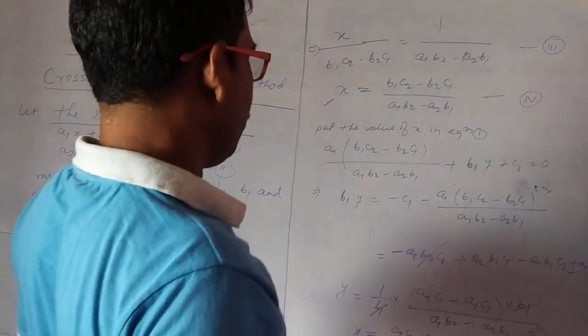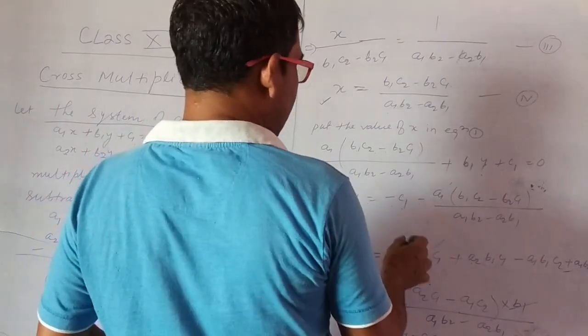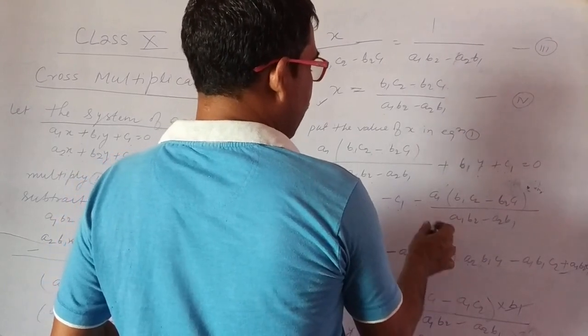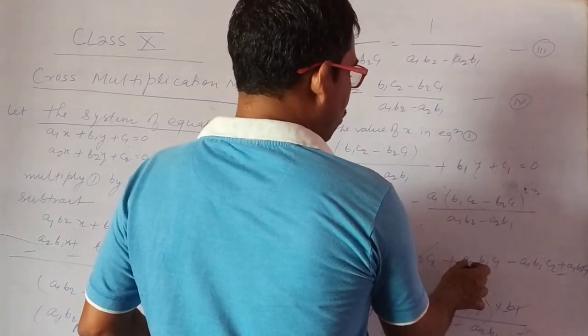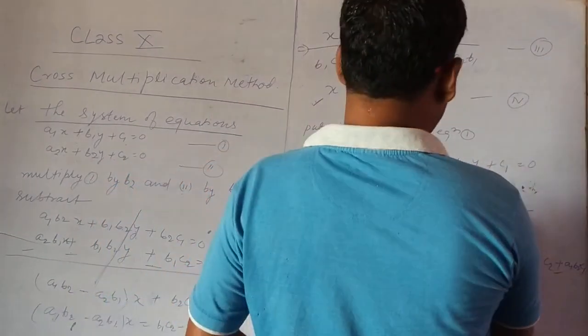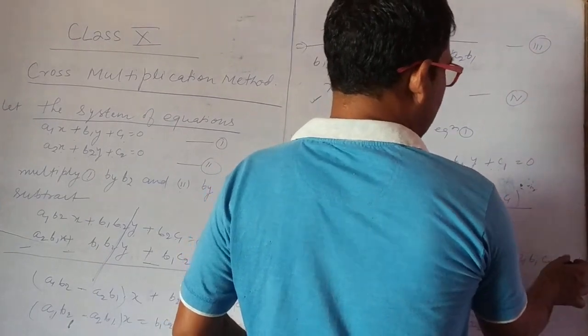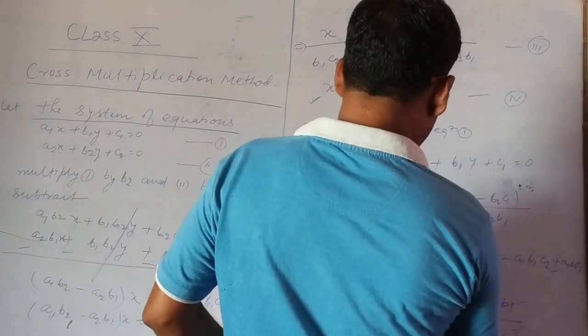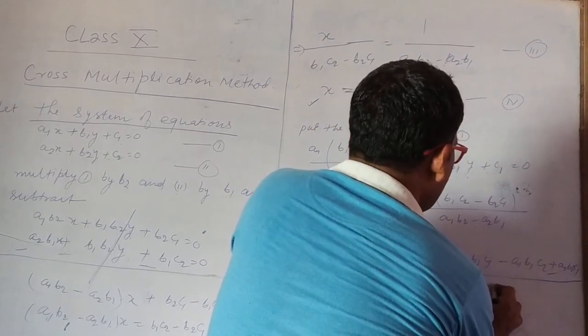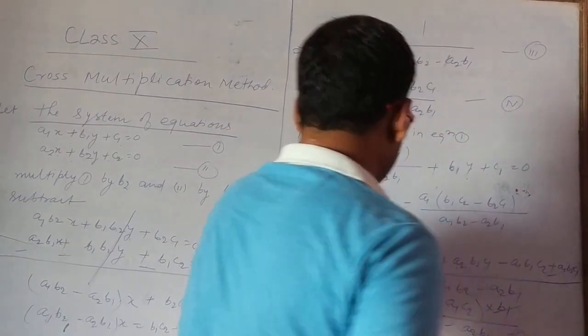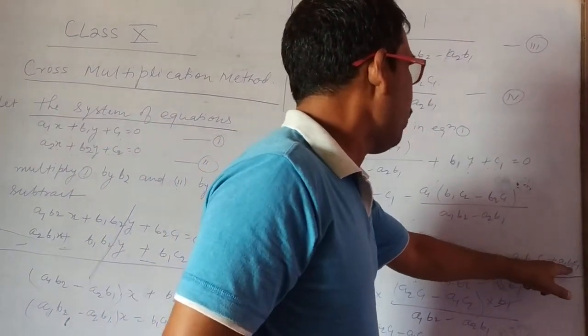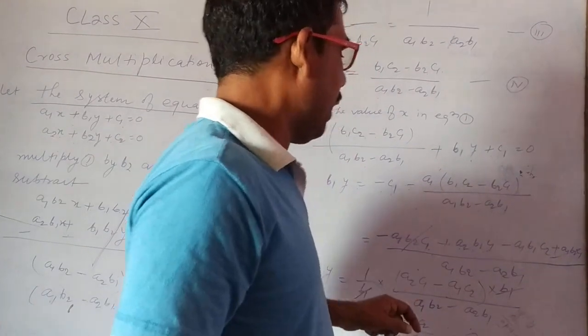minus a1b1c2 plus a1b2c1 minus c1a1b2 plus c1a2b1 by a1b2 minus a2b1. So, this a1b2c1 and this a1b2c1 cancel because they have opposite signs.